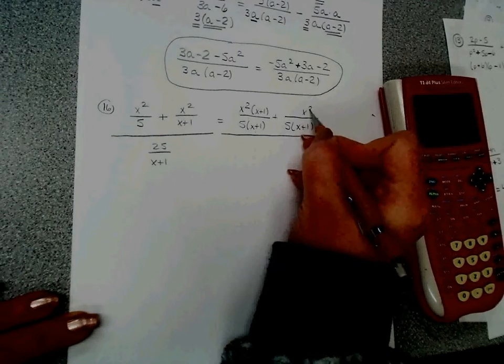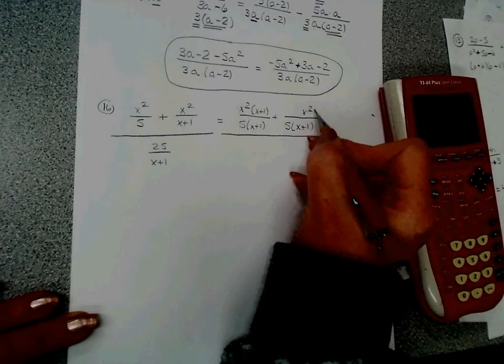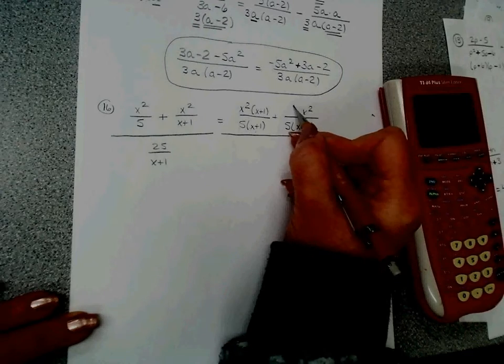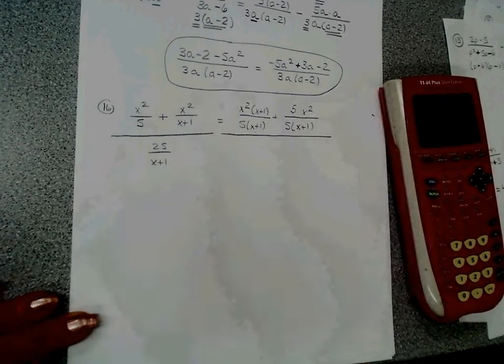Over here, this is what I started with. The 5 is extra, so I've got to multiply the top by 5, which gives me 5x squared.